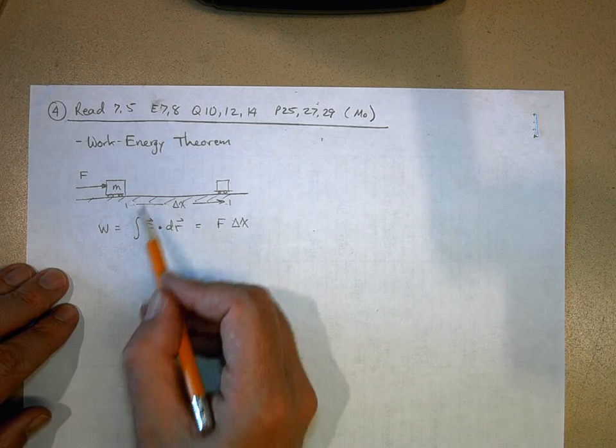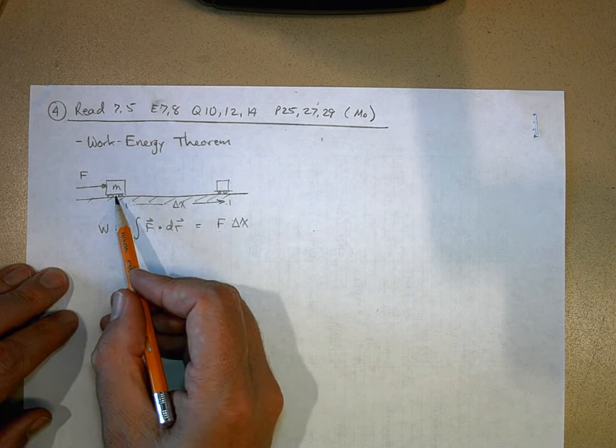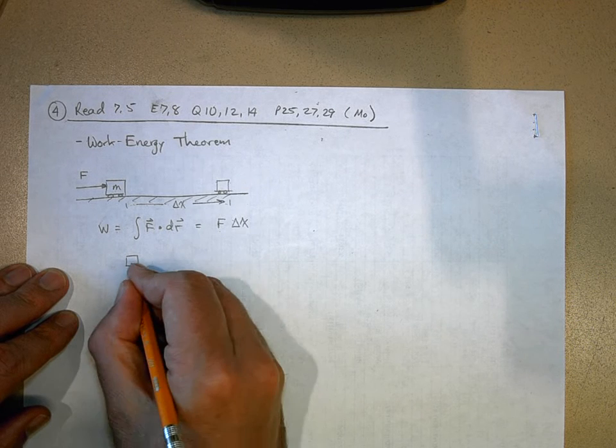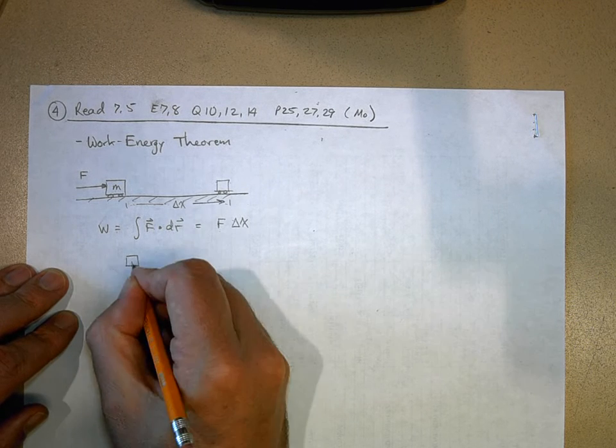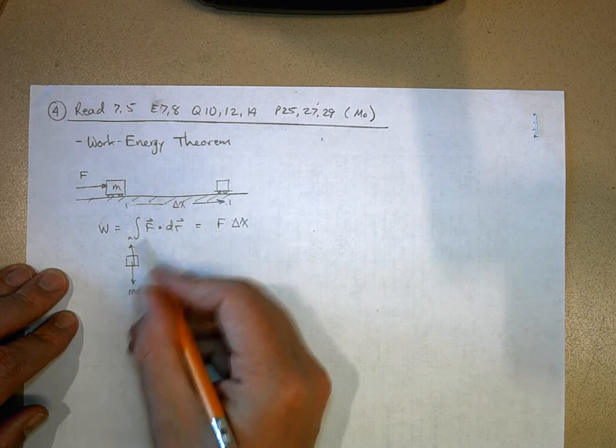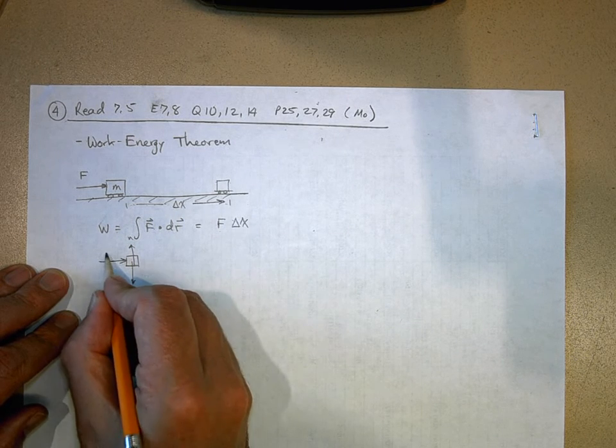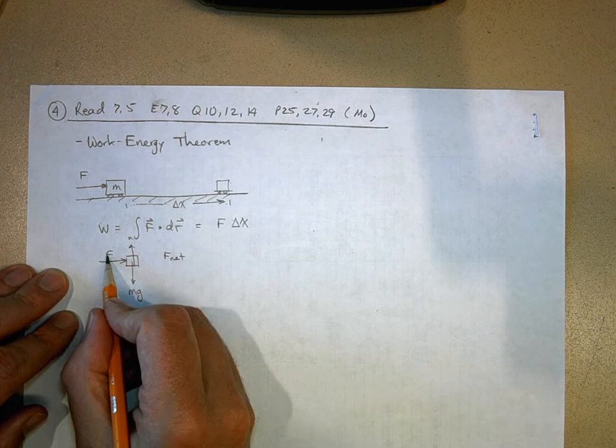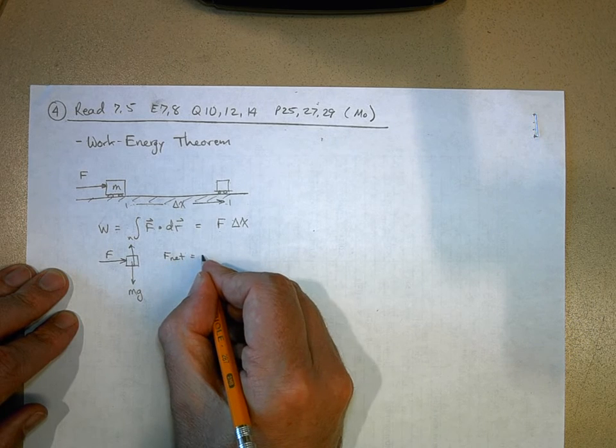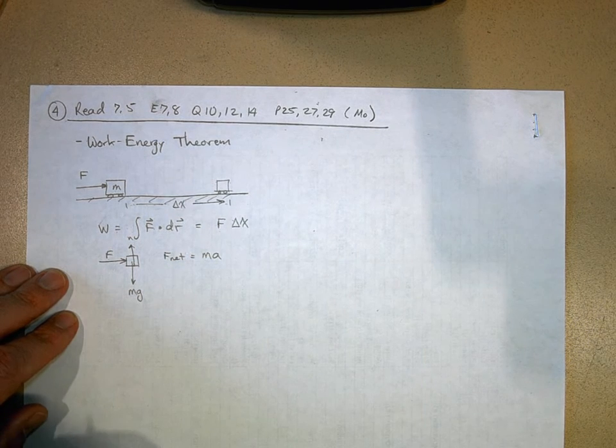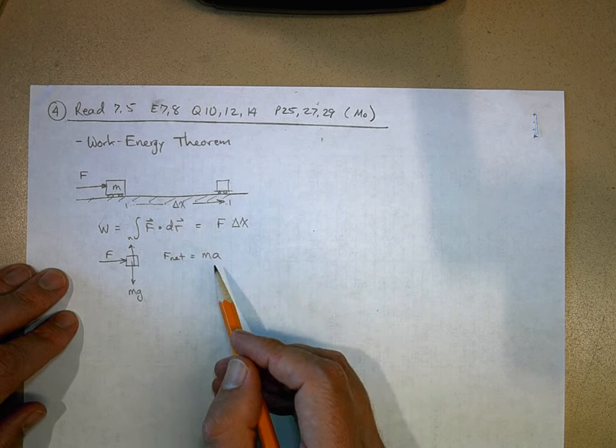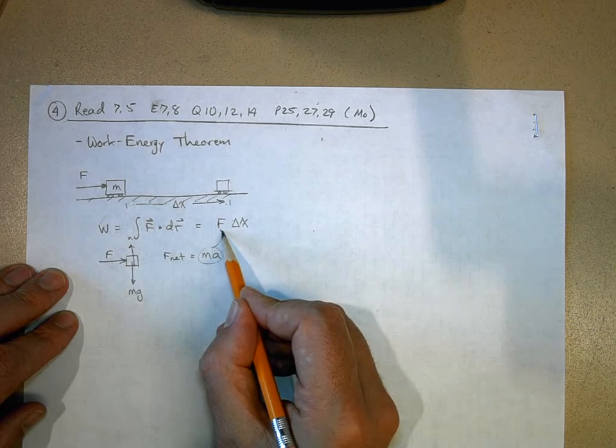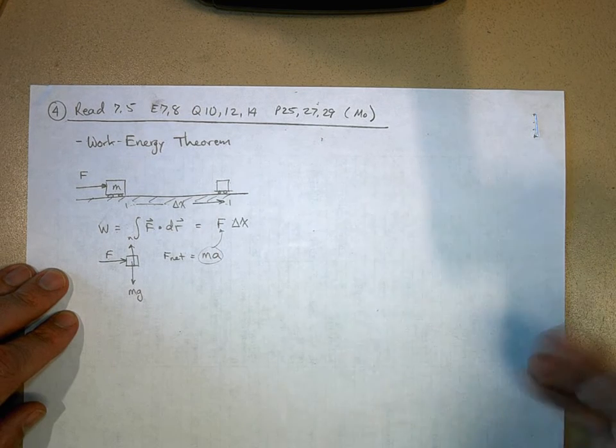Now if we think about this in terms of kinematics, let's draw a free body diagram of this guy. There's the weight pulling it down, there's a normal force pulling it up. Who cares about those because they don't really do anything. But here's our net force. This net force, this force is the only force that's causing any acceleration, equals ma.